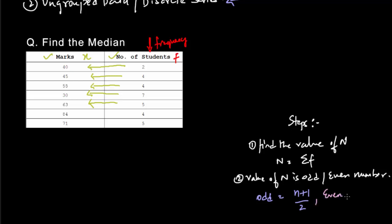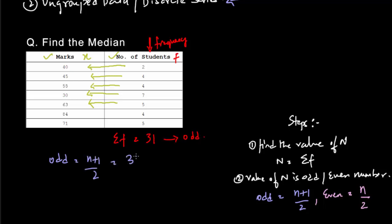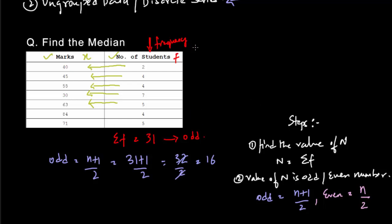If N is even, we simply do N/2, that is, divide N by 2. In this problem, the value of N turns out to be 31 — which is an odd number. Therefore, we do (N+1)/2 to get the median position, and that gives us 16. Now, the number 16 has no relevance in the data set as of now, so this is where cumulative frequency comes into play.